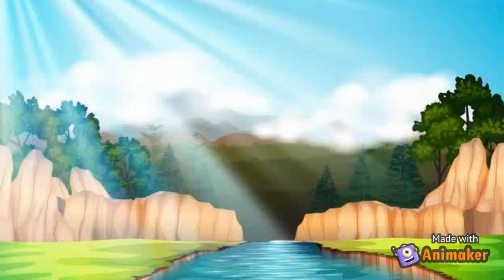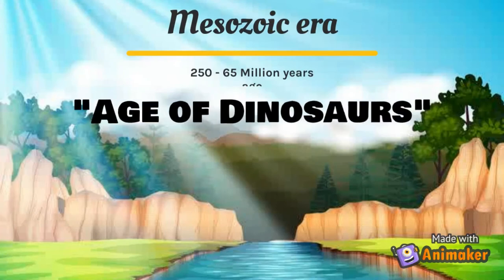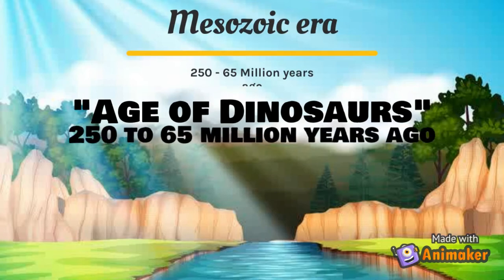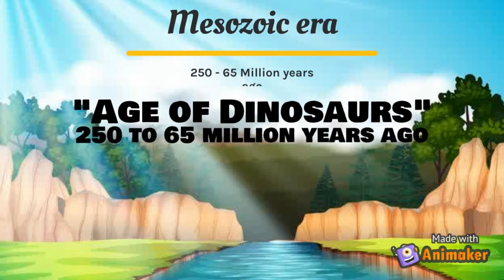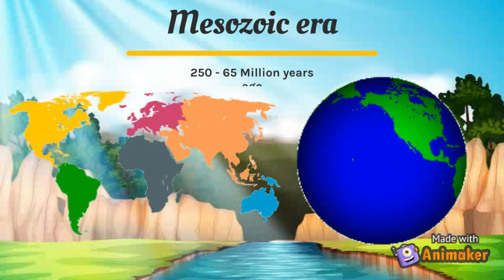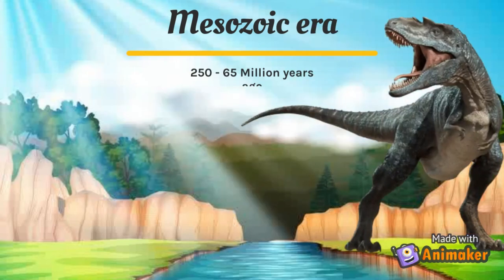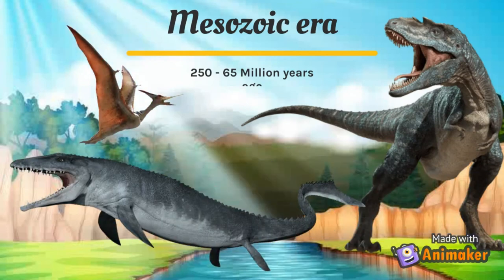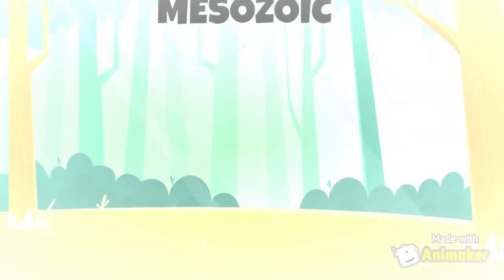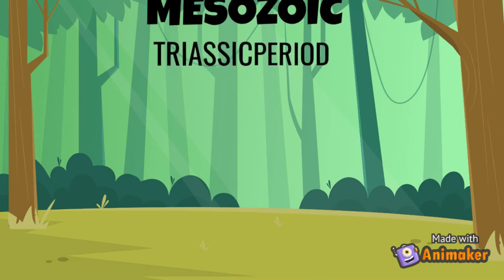The era that followed was the Mesozoic era, known as the age of the dinosaurs. It lasted almost 180 million years, from approximately 250 to 65 million years ago. During this era, the continents began to move into their present-day configurations. The dinosaurs, pterosaurs, and ichthyosaurs went extinct in this era.